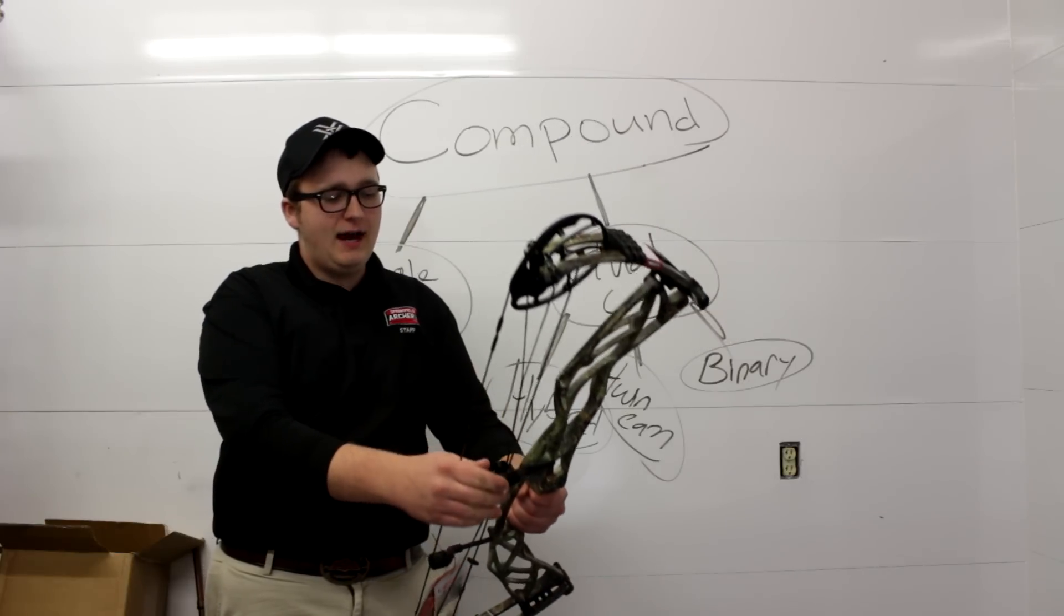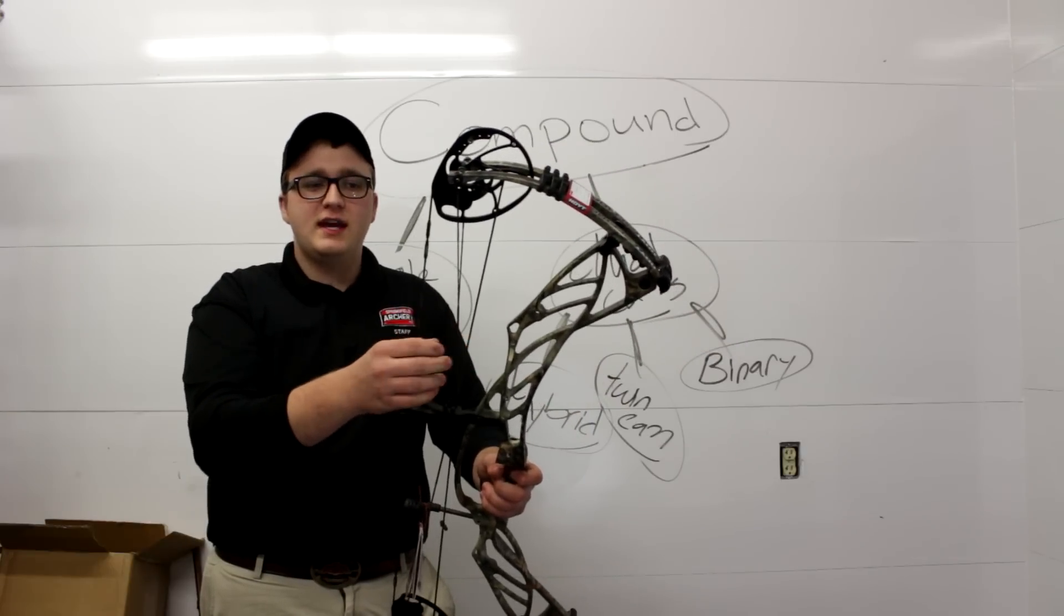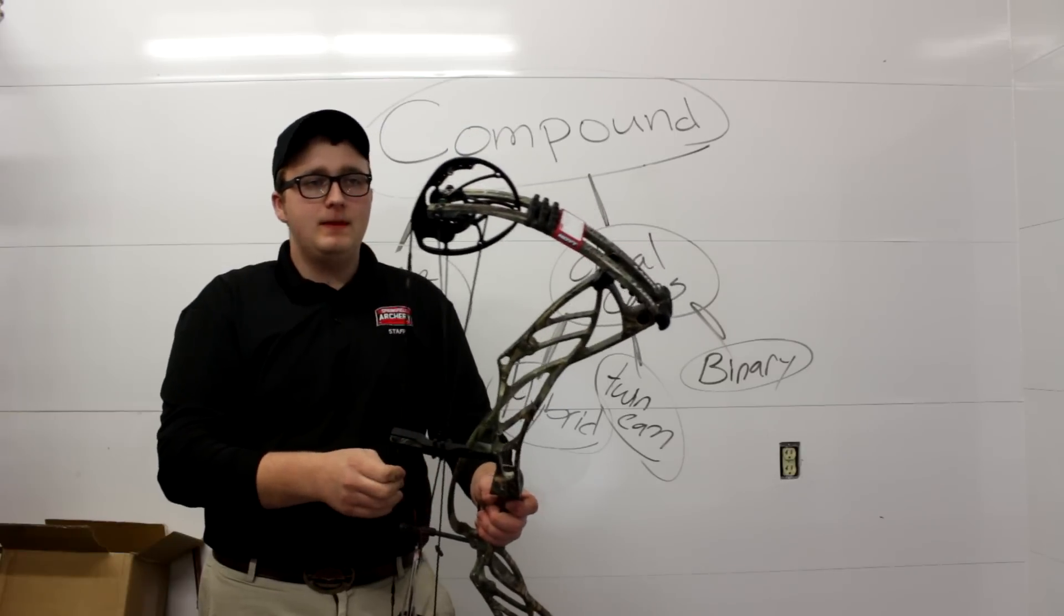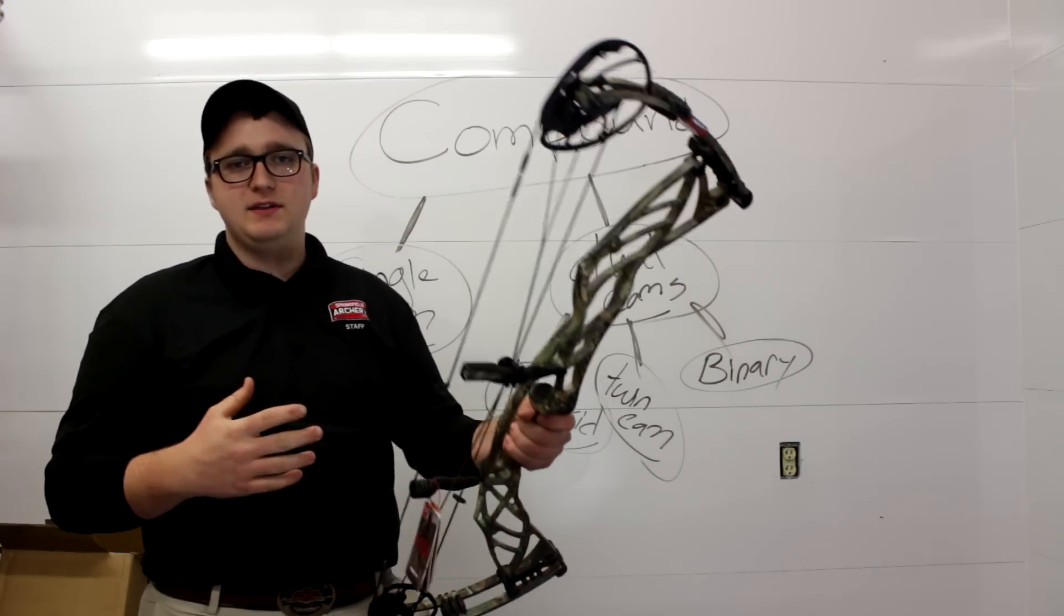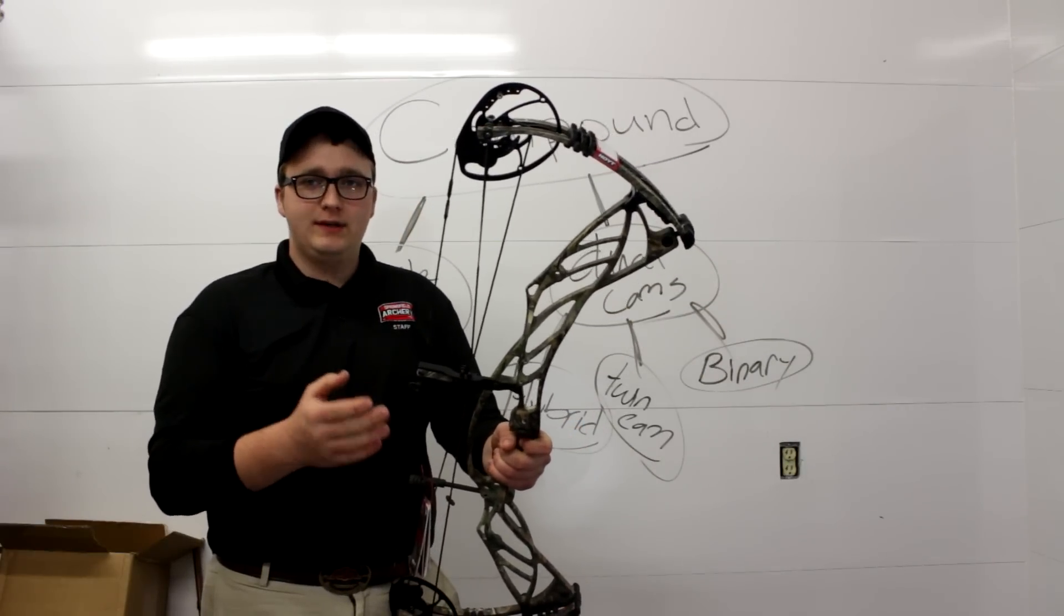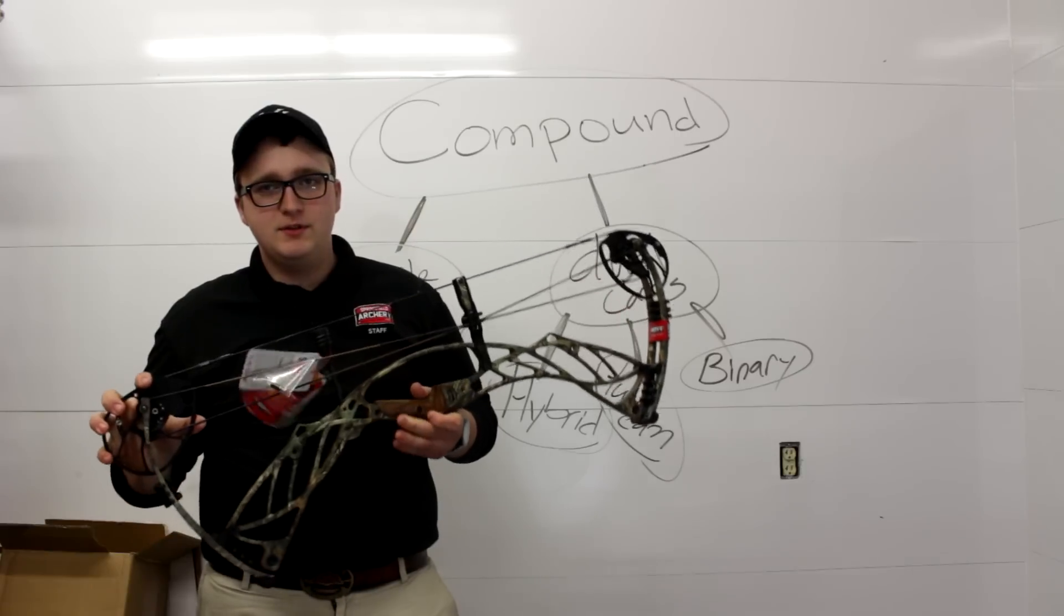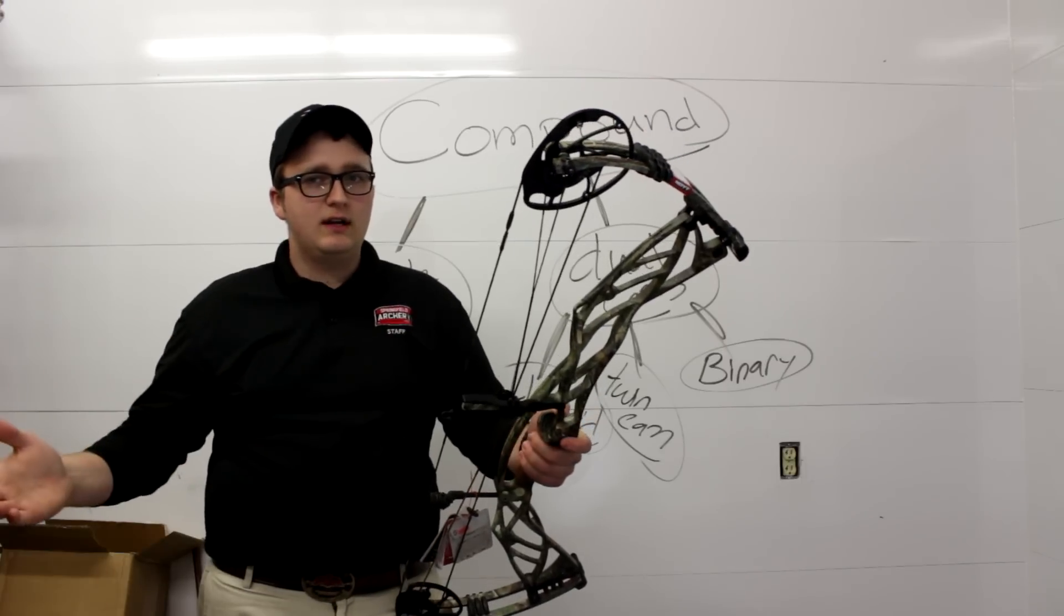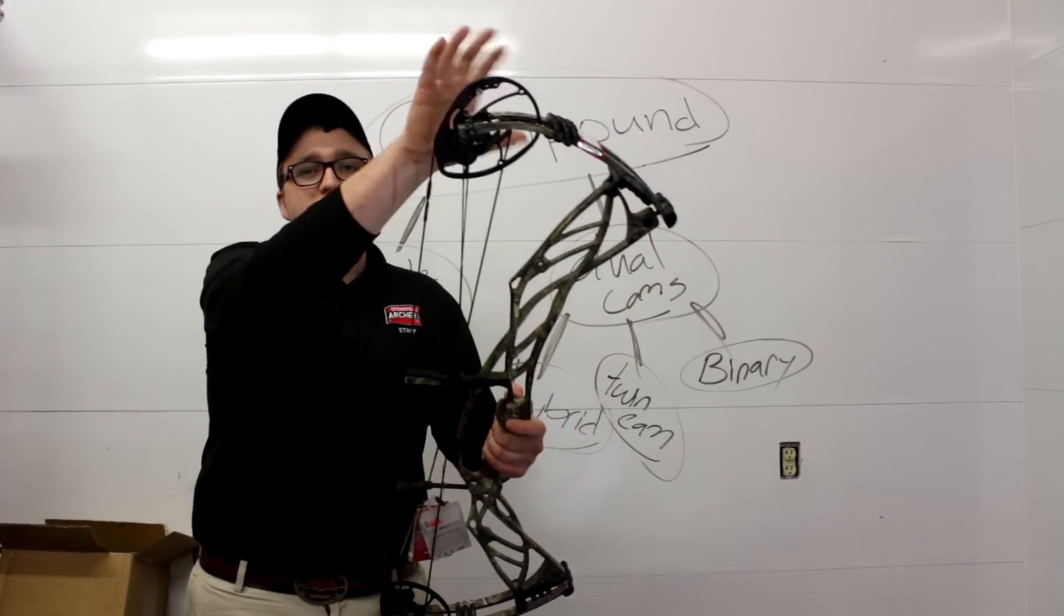Next on the list is the hybrid cam. I went ahead and I grabbed that Hoyt Defiant again. Like I said earlier it utilizes all three strings and cables. It's got the bow string, your bus cable, and your control cable. The hybrid cam system kind of became popular when Darton came out with their CPS cam system. But it really blew up when Hoyt came out with their cam and a half system in 2003. And that is oftentimes what this hybrid cam system is referred to as. It's referred to as the cam and a half system. It's kind of like calling a tissue a Kleenex. Kleenex is a brand name whereas a tissue is what it is. So this is a hybrid cam system.